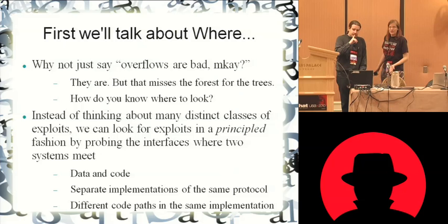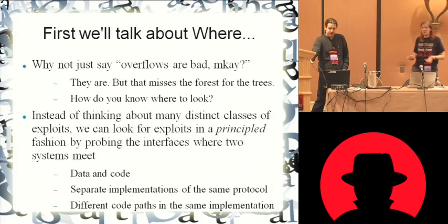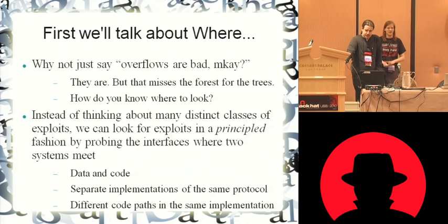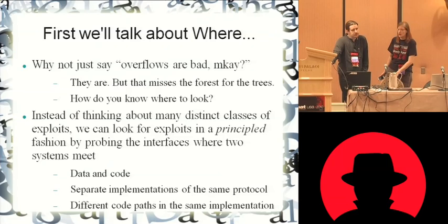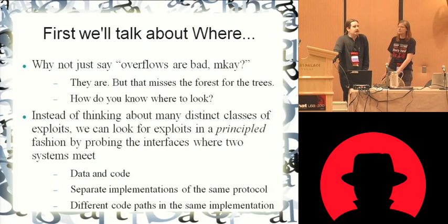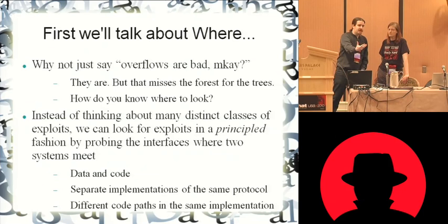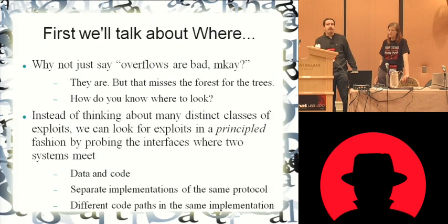Another boundary that tends to be ripe for problems is when you have multiple implementations of the same protocol. This was what we had a lot of fun with last year between NSS, CryptoAPI, and OpenSSL — because you wind up with a situation where they're not all speaking the same protocol. They're all speaking versions of the same protocol in, in most cases, mutually intelligible dialects. However, if one implementation of the same protocol parses the same input data differently than a second implementation, you now have proof that they're not identical, and secondly, you've got a point of weakness.